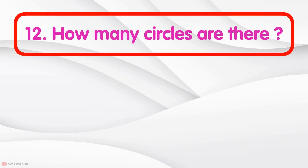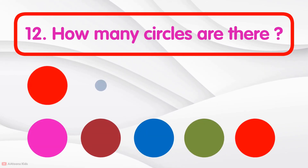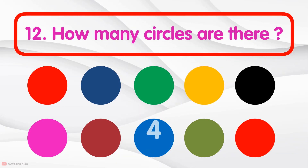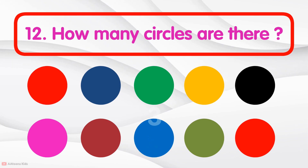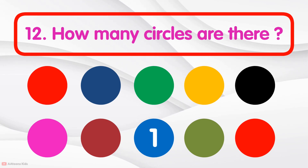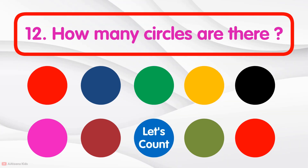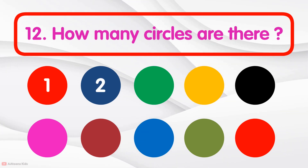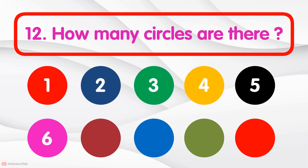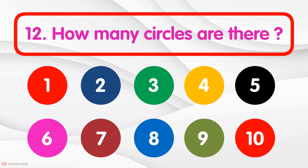How many circles are there? Let's count: 1, 2, 3, 4, 5, 6, 7, 8, 9, 10. There are 10 circles.